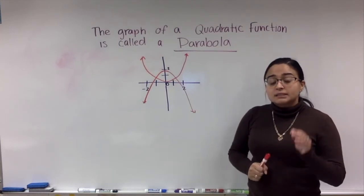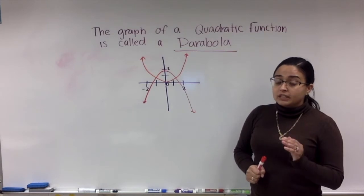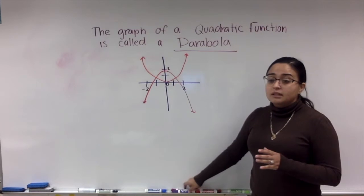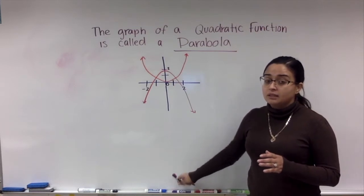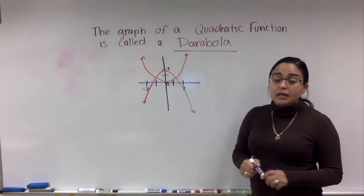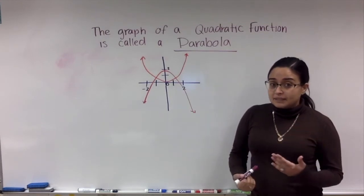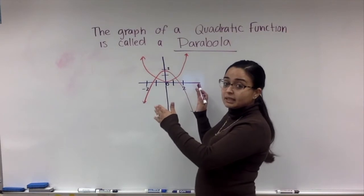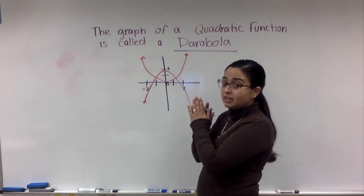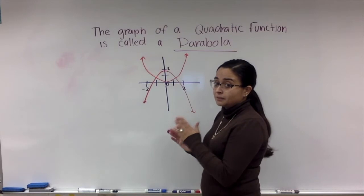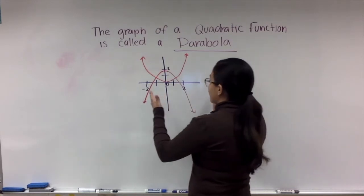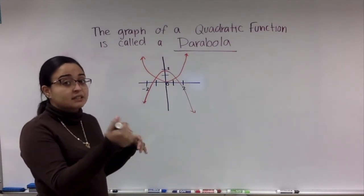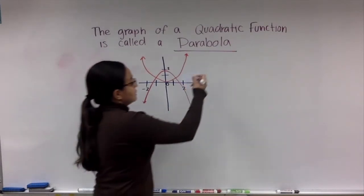Now something else that I want you guys to learn today is about symmetry. What that means is if I were to fold this graph right in half, both sides would match. So that's fold right in half, right there. It's actually called the axis of symmetry.